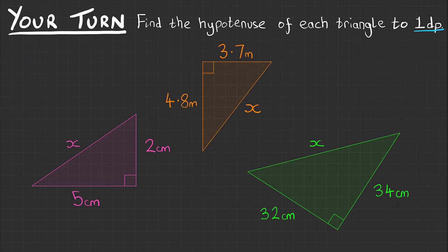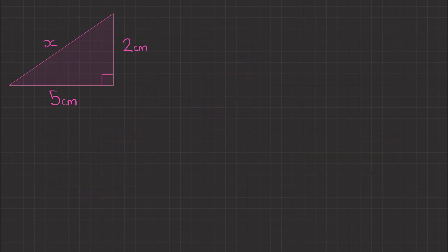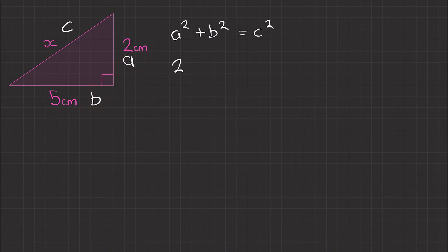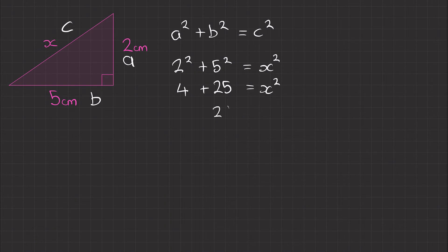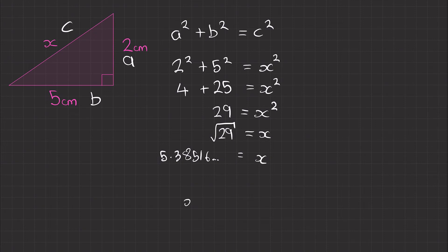Here's your chance to try three questions. Find the hypotenuse of each triangle to one decimal place. For the pink question, let's write down Pythagoras' Theorem: a squared plus b squared equals c squared. Label the sides: a, b and c. Substituting the values: 2 squared plus 5 squared equals x squared. 4 plus 25 equals x squared. 29 equals x squared. The square root of 29 gives 5.38516... So our final answer is x equals 5.4 centimeters to one decimal place.